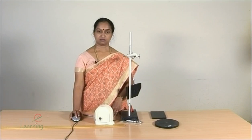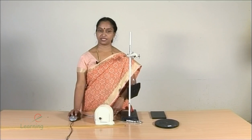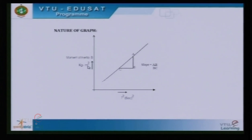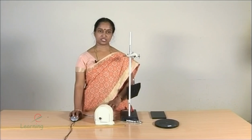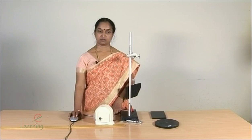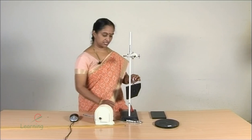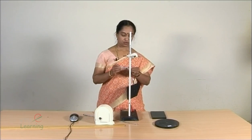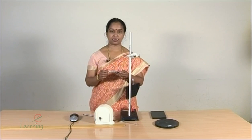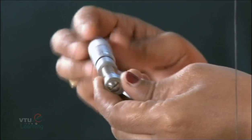A graph is plotted between moment of inertia and the square of the time period of regular objects, which shows a straight line. This reveals that the moment of inertia of a regular object is always proportional to the square of the time period of the corresponding object. The slope is evaluated, which gives the I/T² ratio. Next, the radius of the wire is determined using a screw gauge, and before that the least count of the screw gauge is evaluated using the relation: pitch divided by number of head scale divisions.